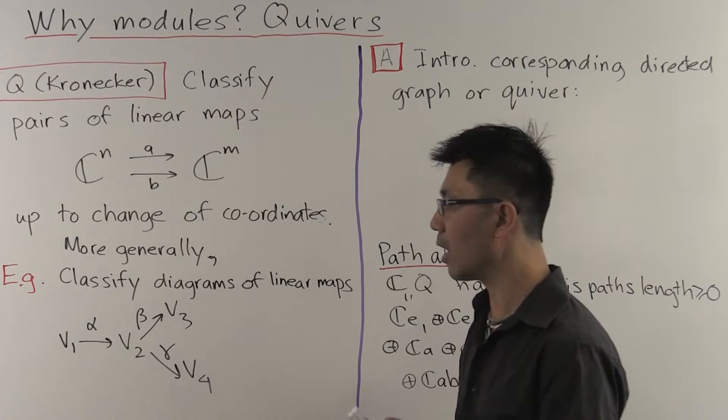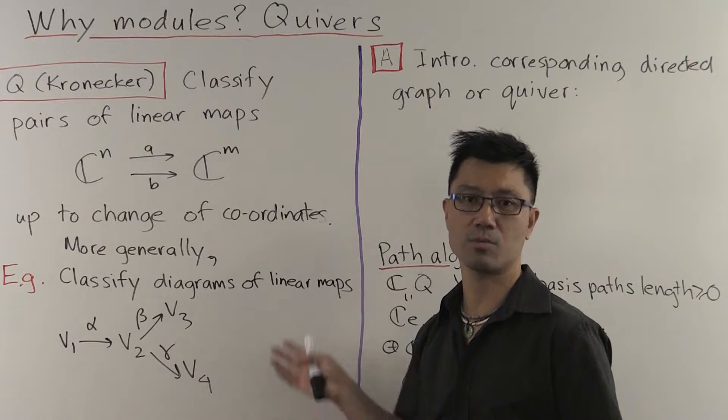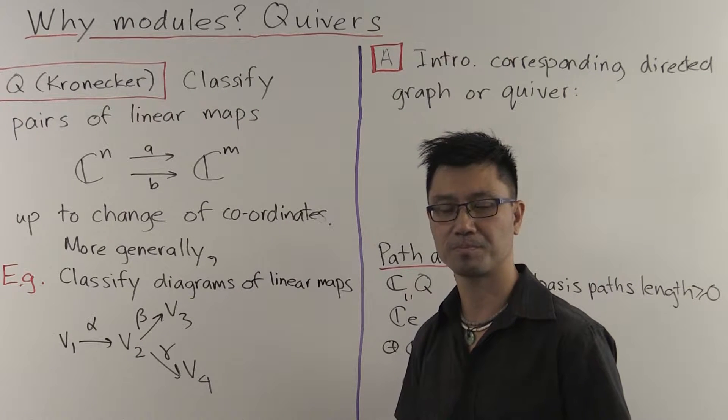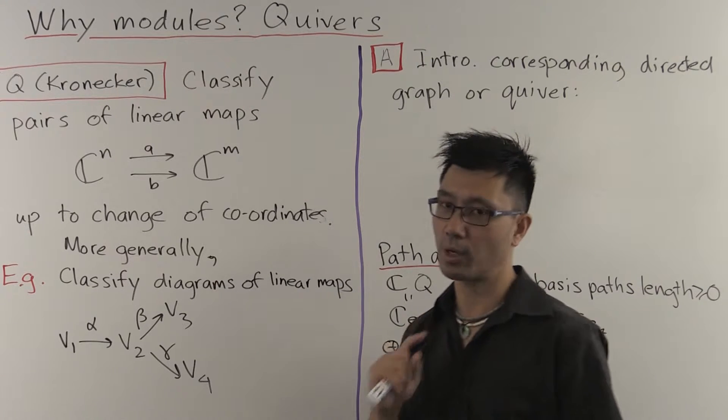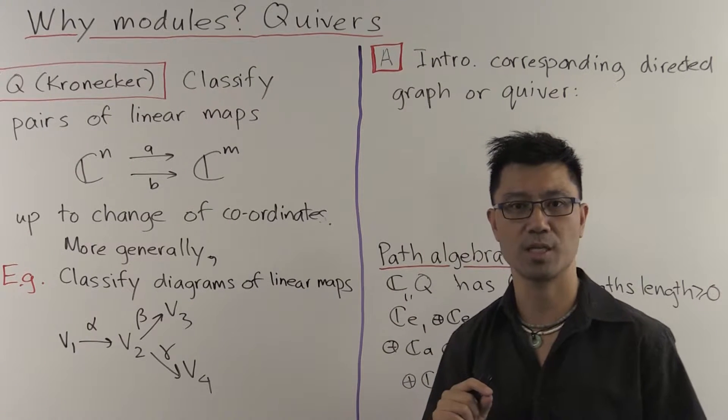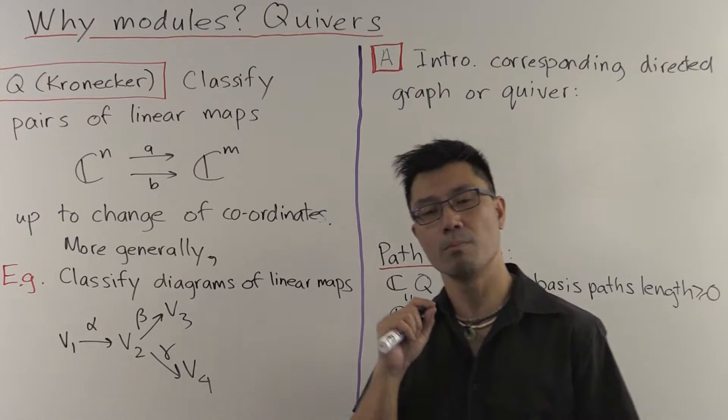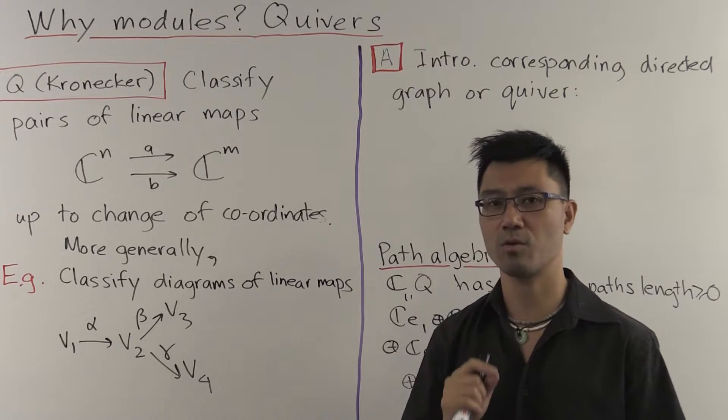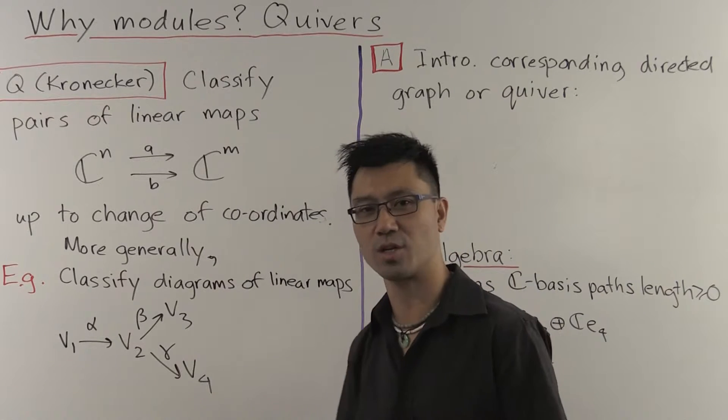And you can also ask, how do you classify such diagrams or study such diagrams, perhaps up to isomorphism? Well, I claim that module theory is the correct way to study this situation here. And to invoke module theory, you need to introduce a ring. So what is that ring? That's what I want to tell you about now.